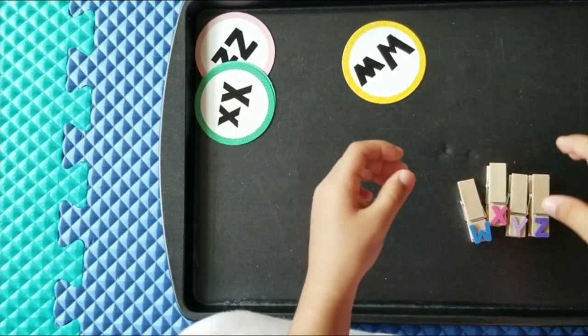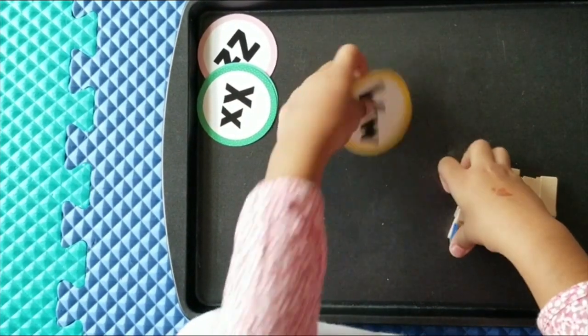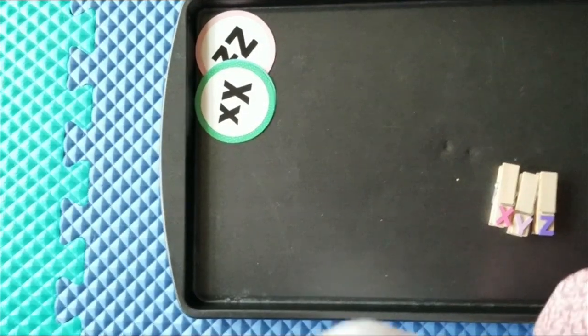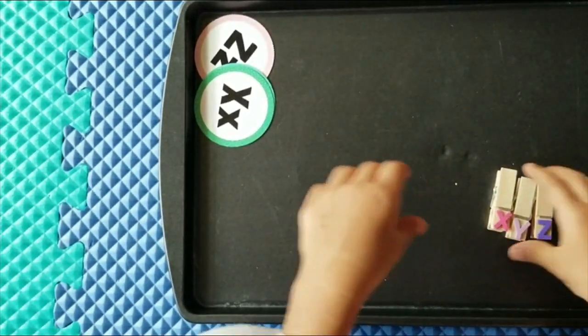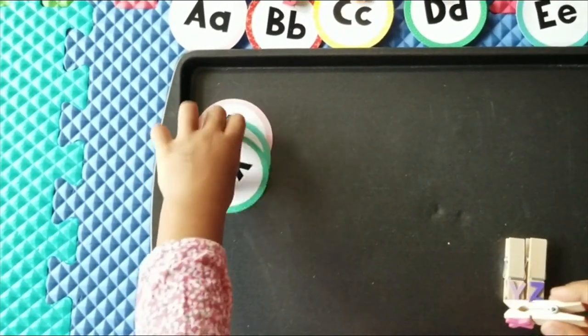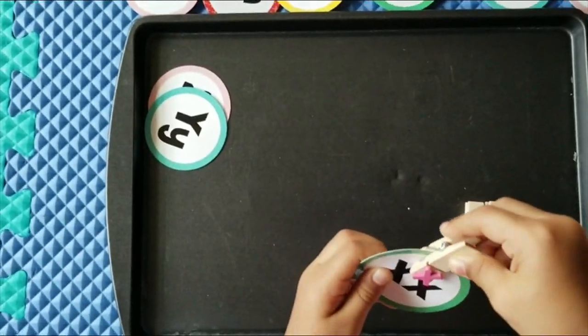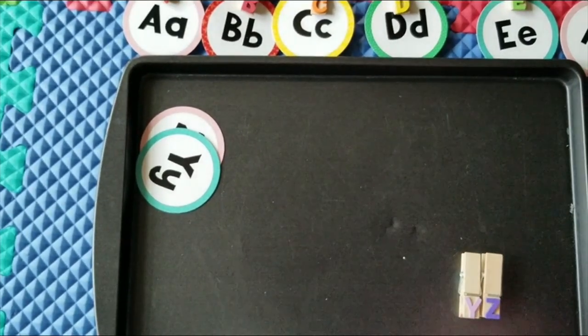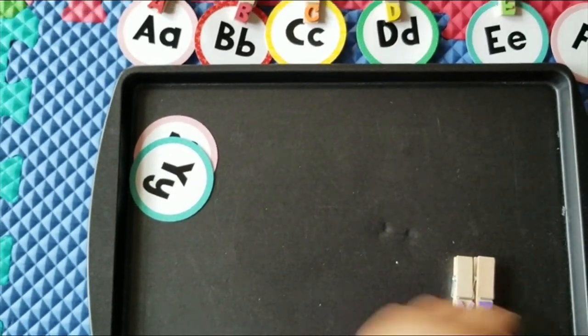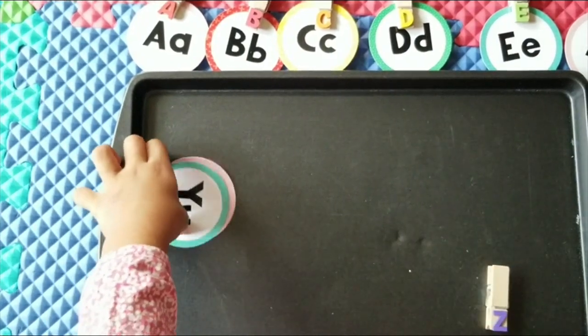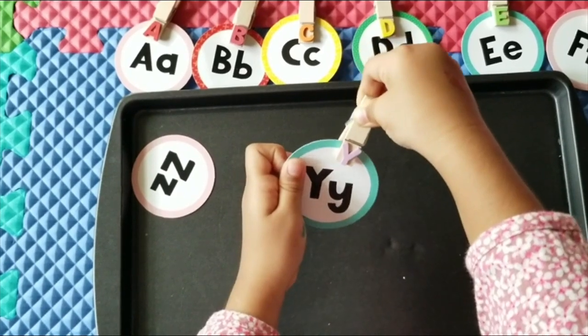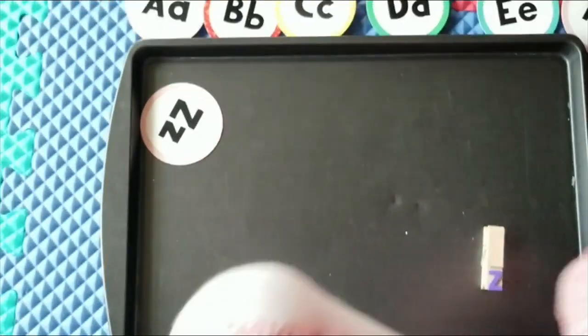This is the letter W which sounds W. Whale. This is the letter X which sounds X. X-ray, xylophone. Next is the letter Y which sounds Y. Yak.